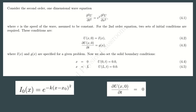Now consider the second-order one-dimensional wave equation: d²u/dt² = v² · d²u/dx², where u is a function of x and t. This is subject to initial conditions: u(x, 0) = f(x) for all points, and du/dt(x, 0) = g(x) for all points. The boundary conditions are u(0, t) = 0 for all time, and u(L, t) = 0 at the other end.